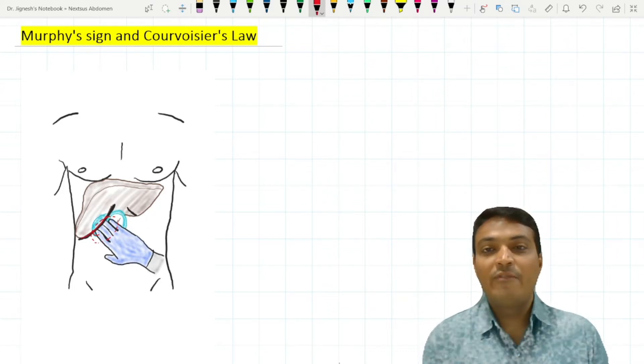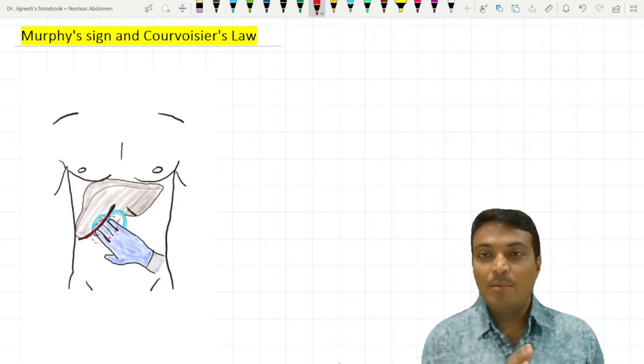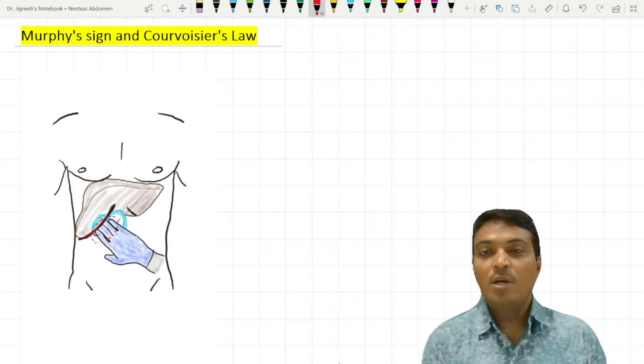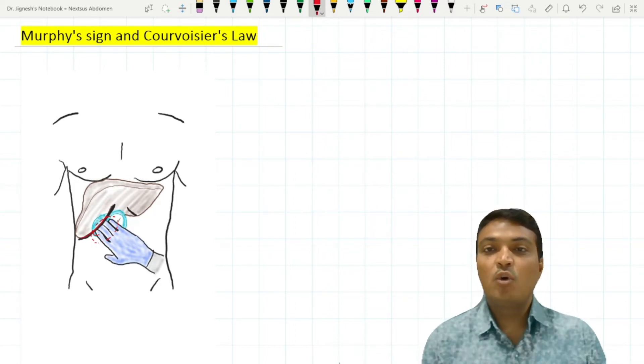And that sign is called Murphy's sign. When Murphy's sign is positive, that indicates severe cholecystitis.